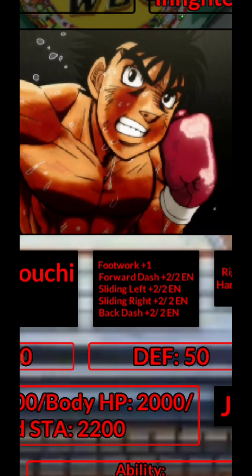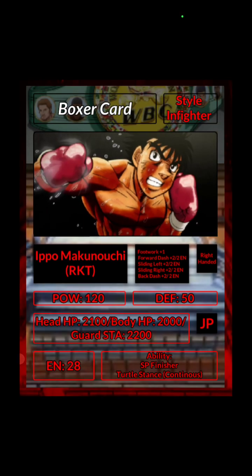Dash will be like a sprint — you see plus two, meaning you can move two spaces, and the slash two EN means it costs two energy to commit to that. Walking regularly doesn't take any energy, but going faster does. I'm thinking maybe moving should cost one energy, but I feel it's going to cause a lot of issues, so I think footwork plus one should be free. Let me know in the comments if you think differently.